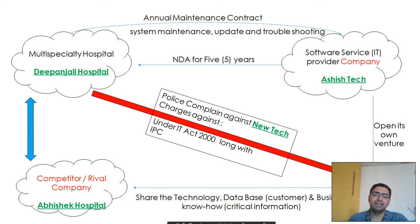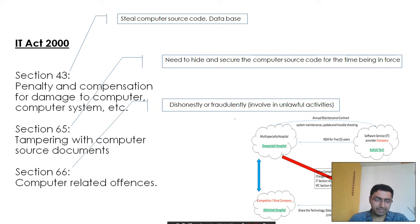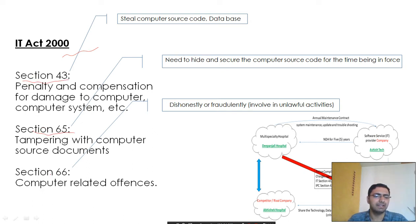Now we'll look at which sections of the IT Act and the IPC Act are applicable to Mr. VJ and his company New Tech. The IT Act provides three sections applicable in this scenario. The first is Section 43, because Mr. VJ stole computer source code and data.